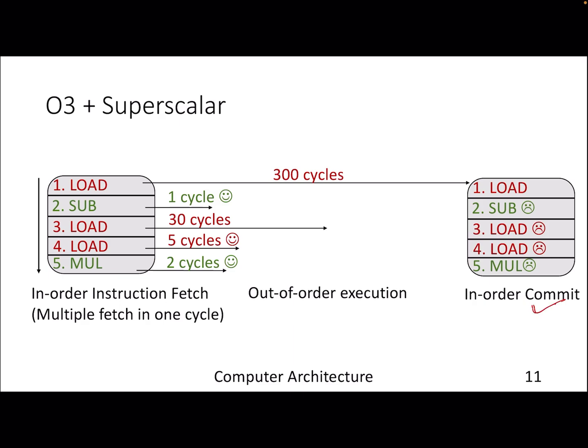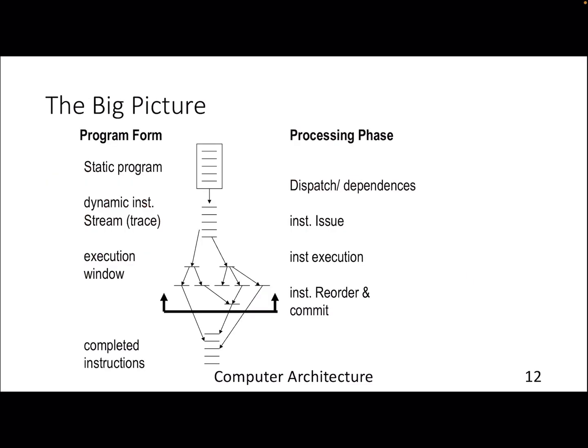We need to go for in-order commit. No matter if an instruction finishes early, it has to wait for the preceding instruction to complete before it can commit — before its result is visible to the rest of the processor and to the programmer. Other instructions using that data may move ahead depending on a scheduler, but from the programmer's point of view you are still waiting for the commit point.